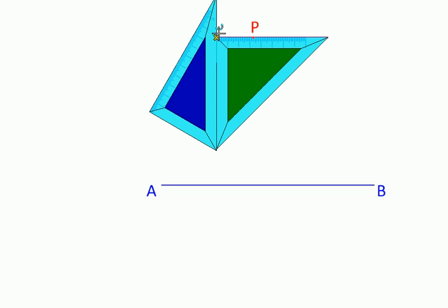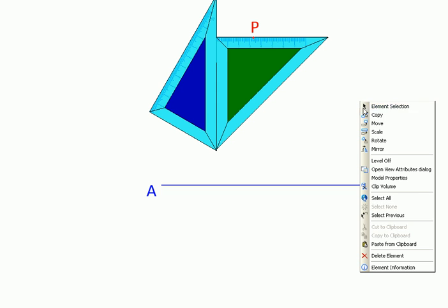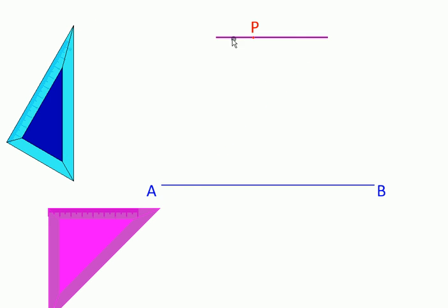And now you can see that we have a line through P which is parallel to AB as required. This simple construction we'll be using very often to do more complex constructions.